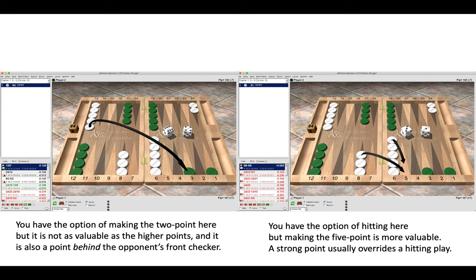A strong point usually overrides a hitting play. What you will notice here is that the two principles I've mentioned so far come into contention, into dispute. And backgammon is often the case that you have to weigh up concepts, you have to decide whether it's better to hit or whether it's better to make a point.